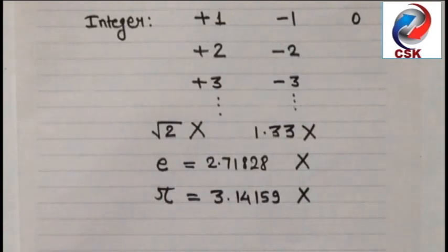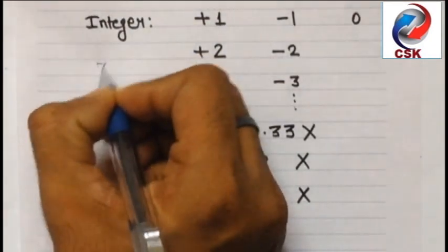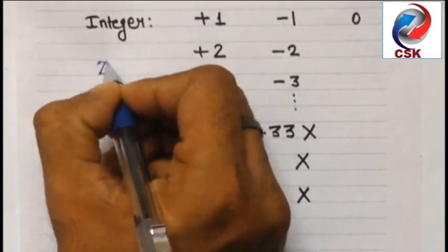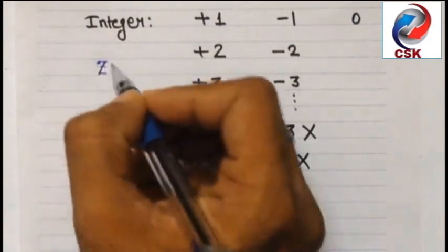My dear students, integer numbers are denoted by Z, which is also pronounced as zed or j.